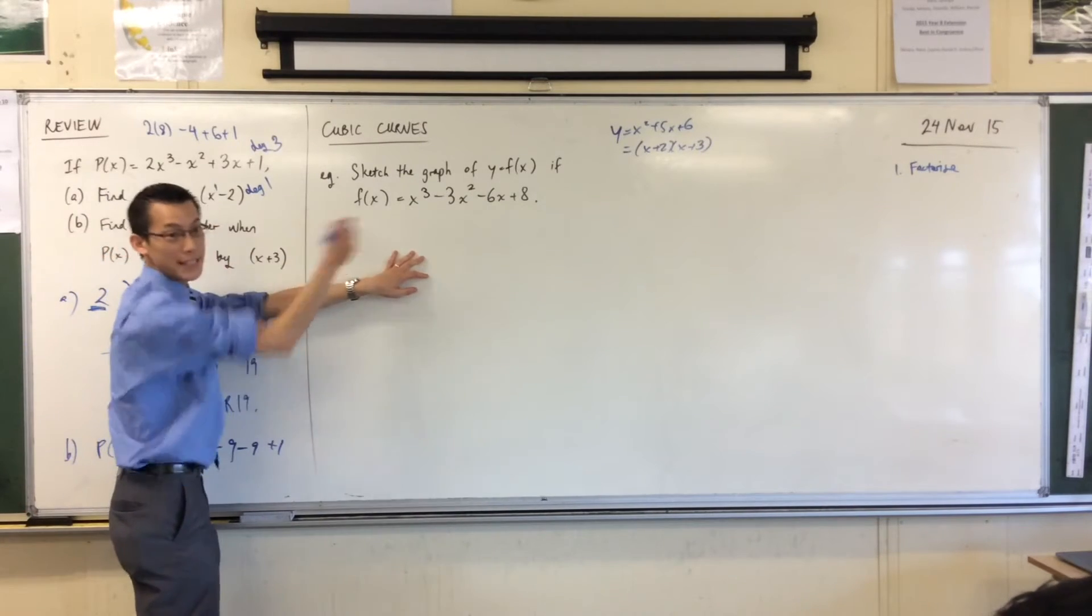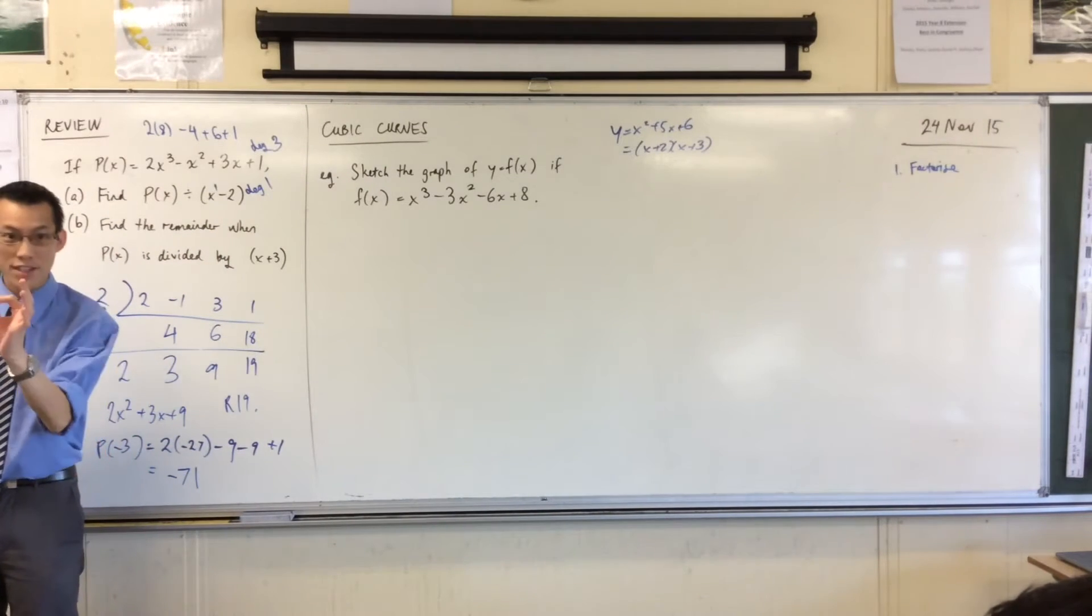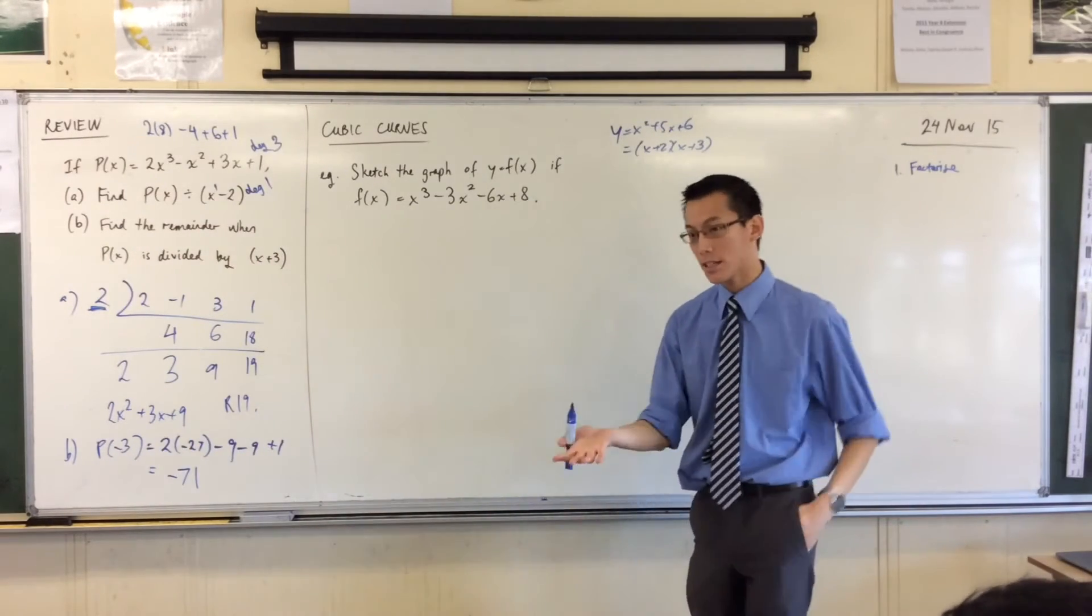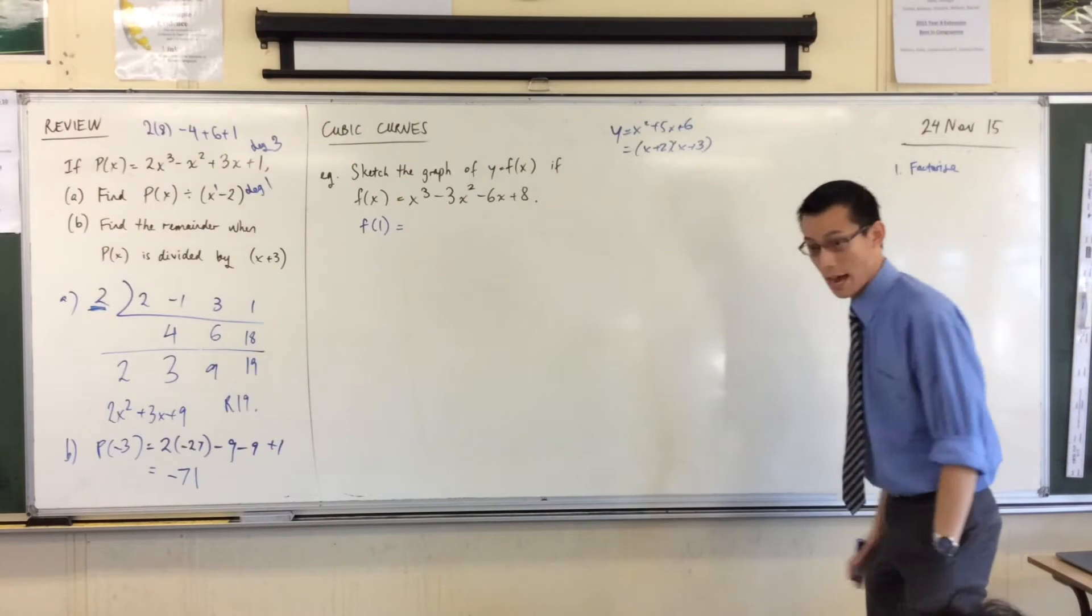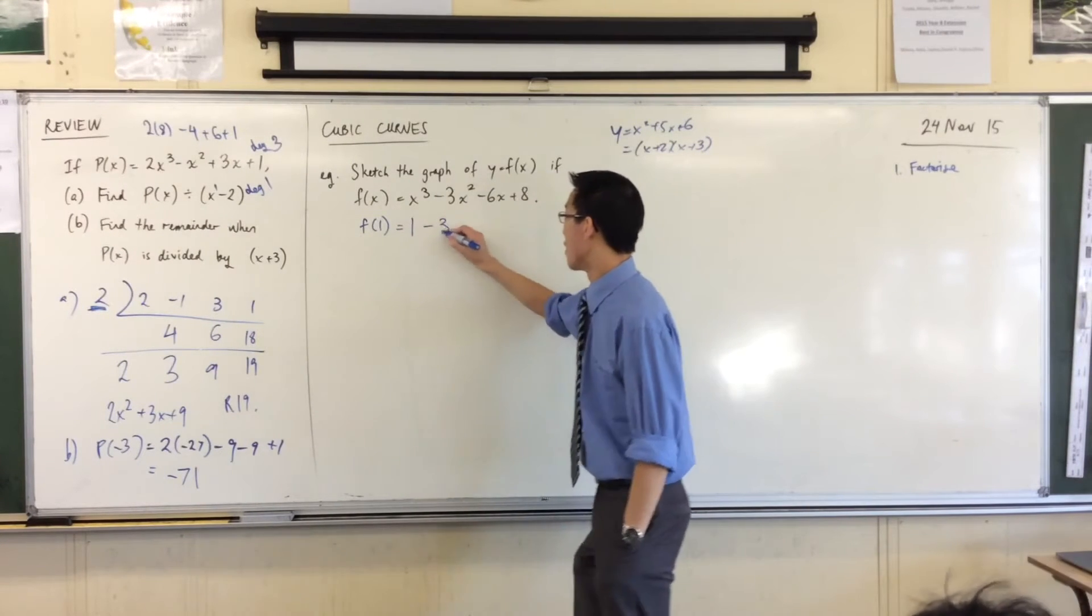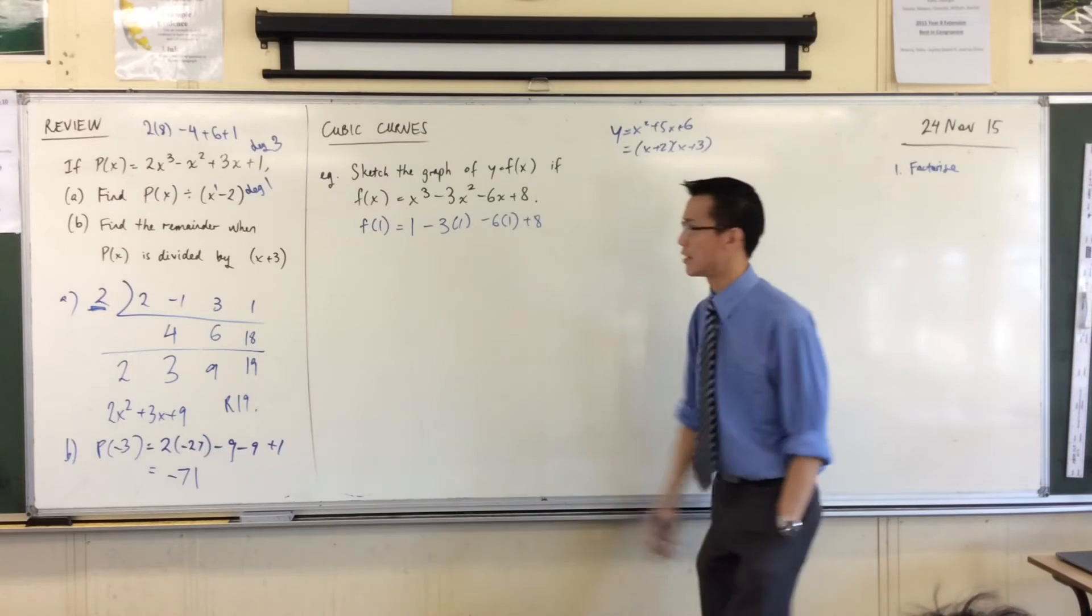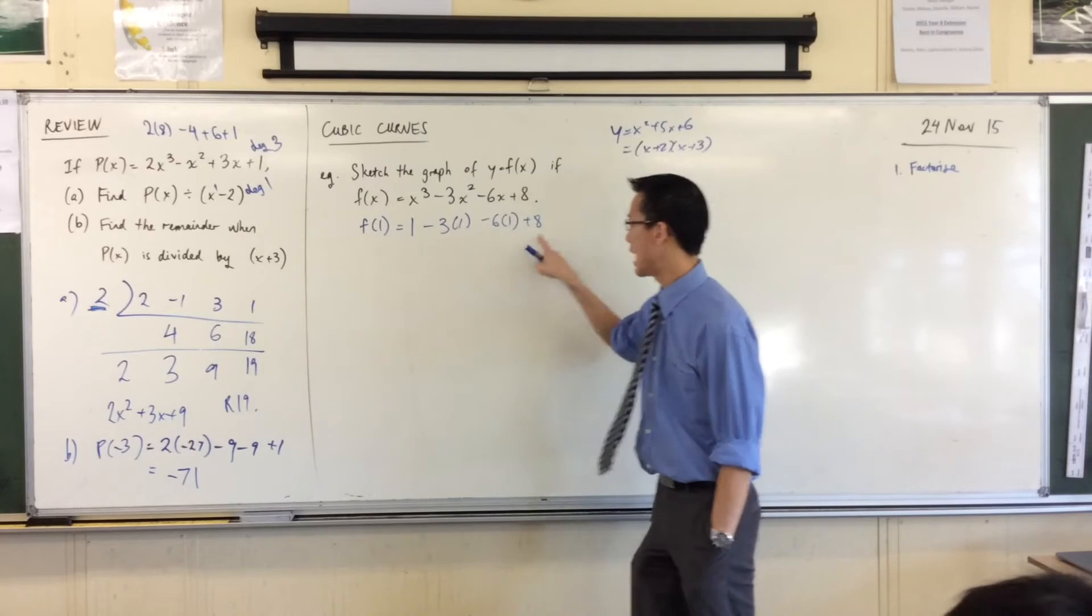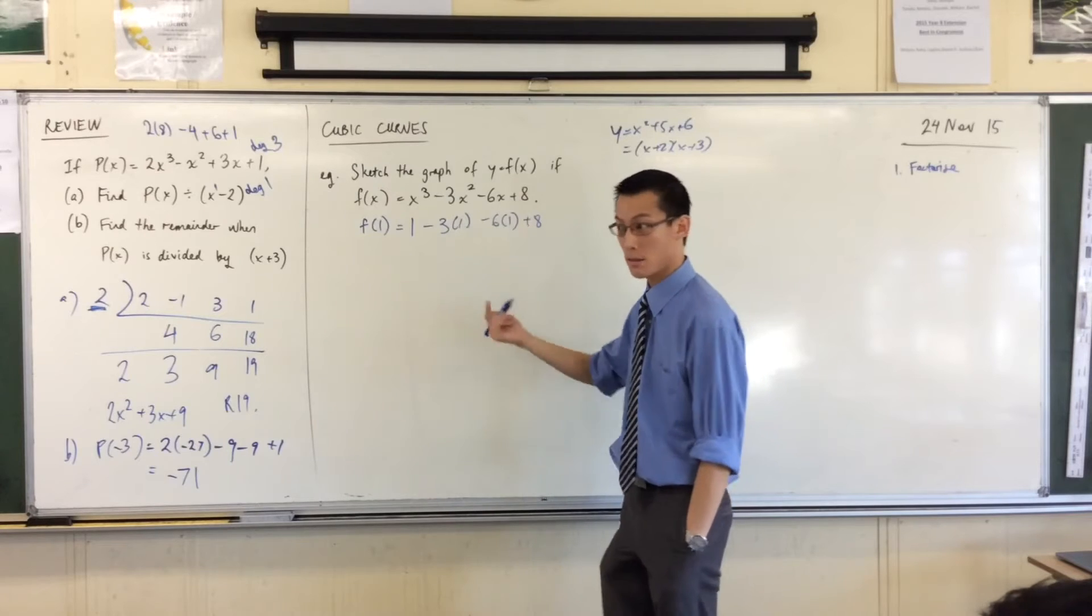So what I'm going to do is I'm going to plug numbers into this thing, just like the remainder is here, until I get, what am I looking for? Zero. I'm looking for zero, because then it's like, oh, there's no remainder. I can actually divide through. So I generally start with, the first number I start with is one. I'll just go to test it out and see what happens. So one cubed is? One. One squared is one. Six times one is six. And there's eight on the end. What's going to happen out of this? One plus eight is nine. Minus three minus six is minus nine. So nine minus nine is zero.